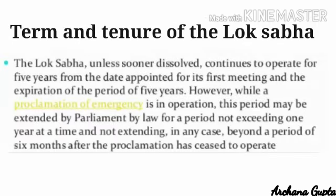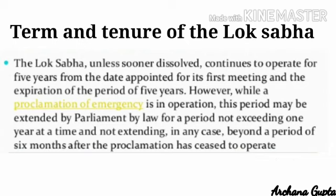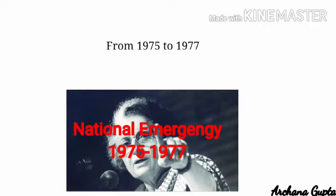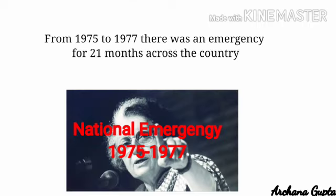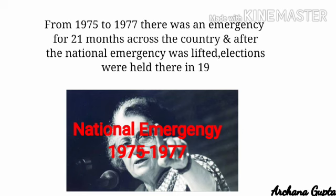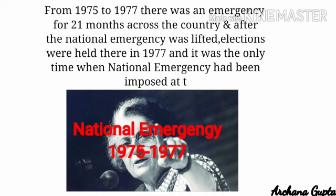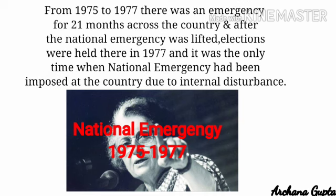The Lok Sabha is normally elected for 5 years. However, it can be dissolved before its normal term by the President on the advice of the Prime Minister. During the proclamation of an emergency, the term of the Lok Sabha may be extended by Parliament for one year at a time, but a new Lok Sabha must be elected within 6 months after the emergency is lifted — as happened in 1977, following the emergency imposed from 1975 to 1977 for 21 months, during which Indira Gandhi was Prime Minister.